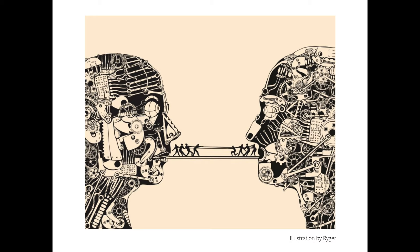Think about what this image might be saying beyond just being a nice picture of two automaton-looking beings staring at each other with their robotic heads. There's a plank linking both of their mouths, and on that plank there's a bunch of people on either side in a sort of tug of war with various ropes. The conclusion you might come to is that this represents a political machine, an argument, or two sides of an issue.